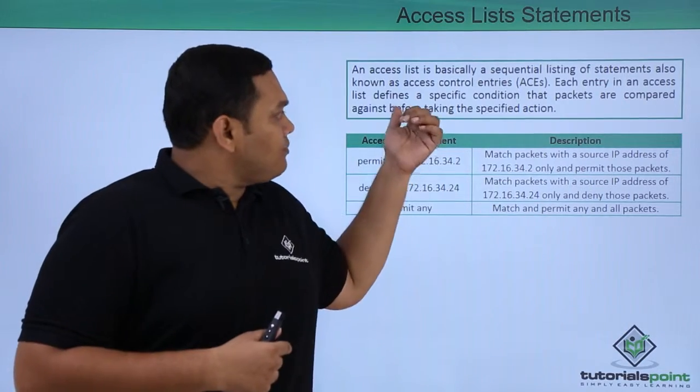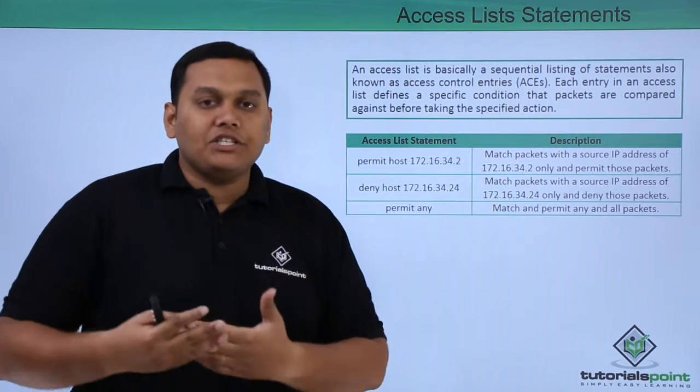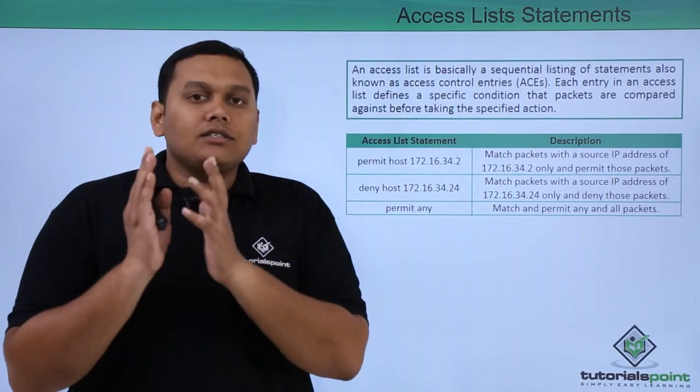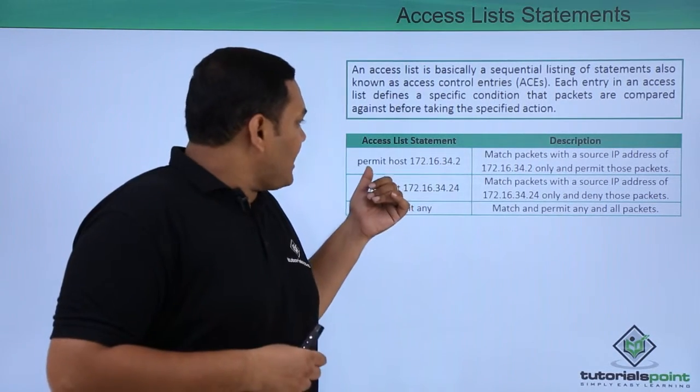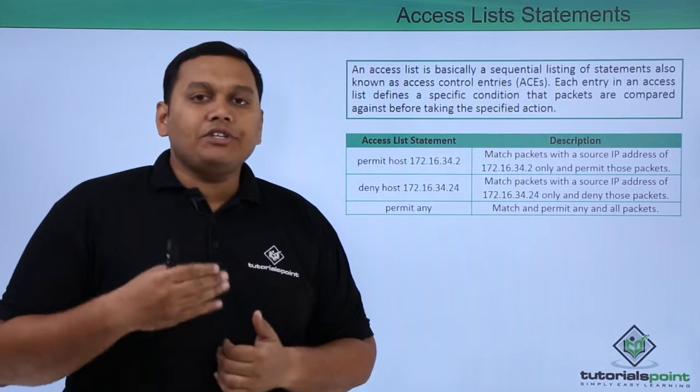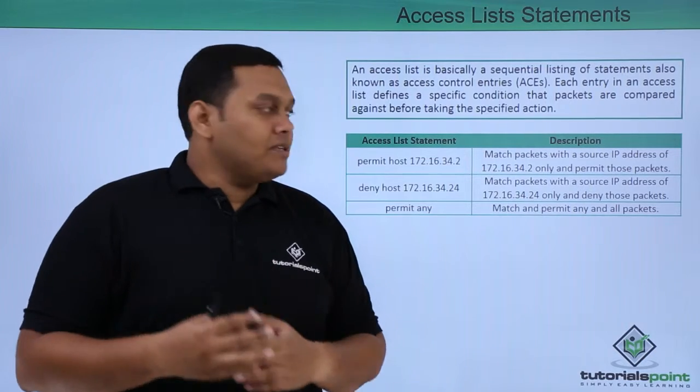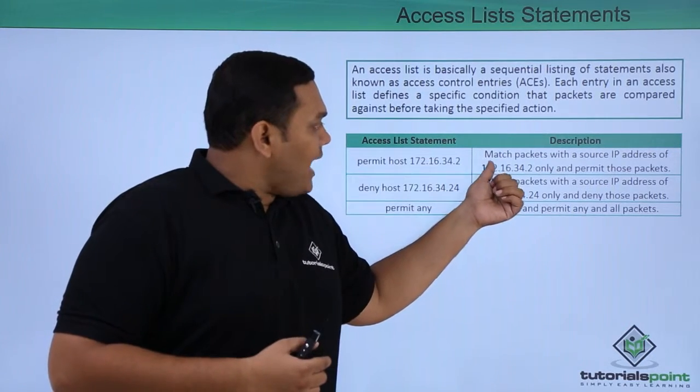Each entry in an access list provides a specific condition to perform the specified action. For example, the statement 'access list permit host 172.16.34.2' will match packets with the source IP address of 172.16.34.2 only and permit those packets.